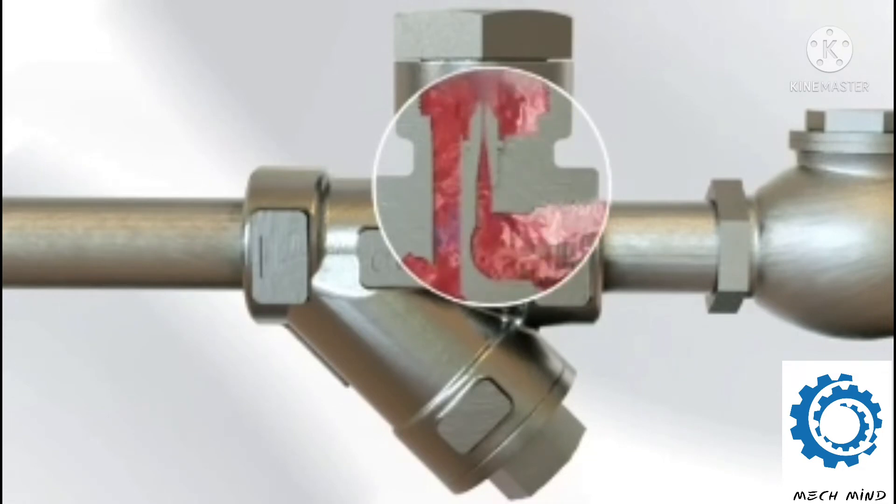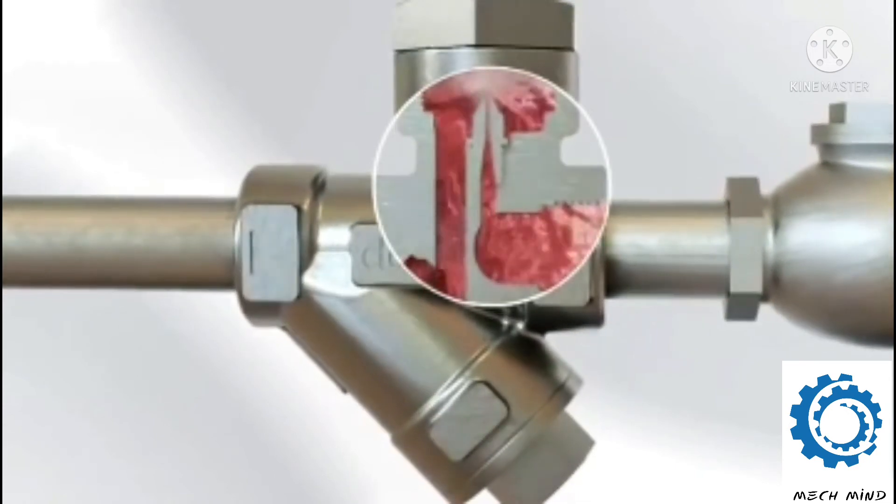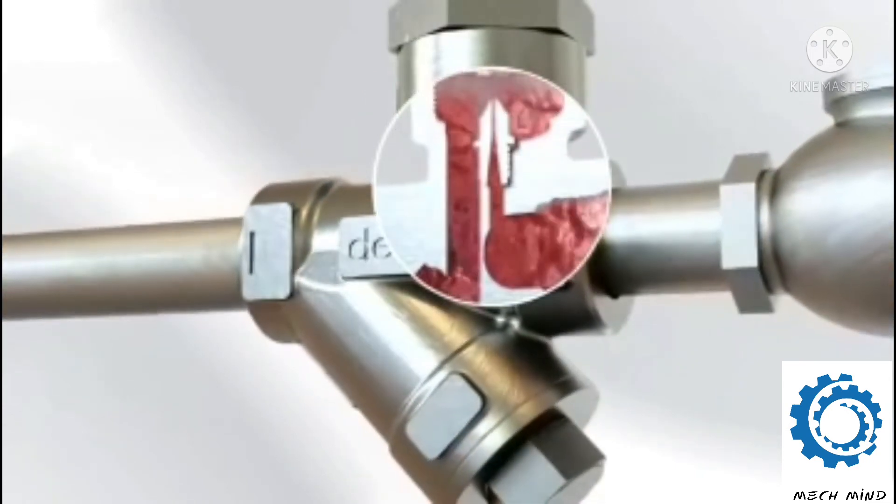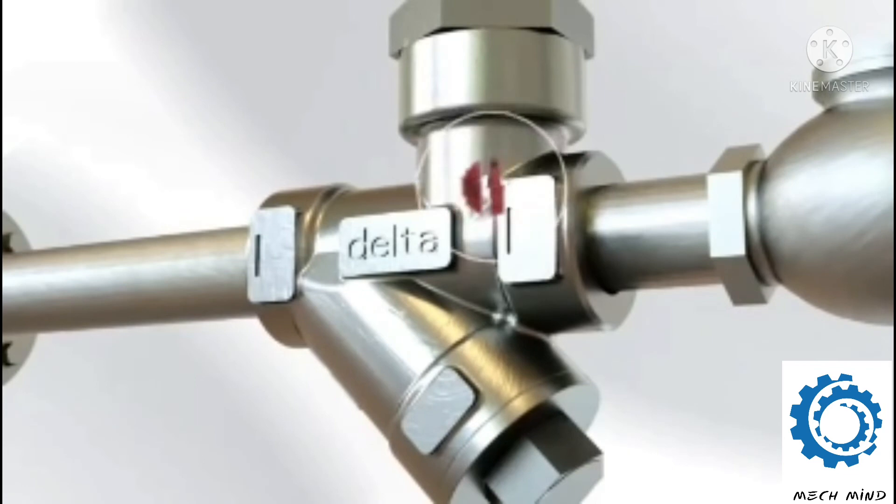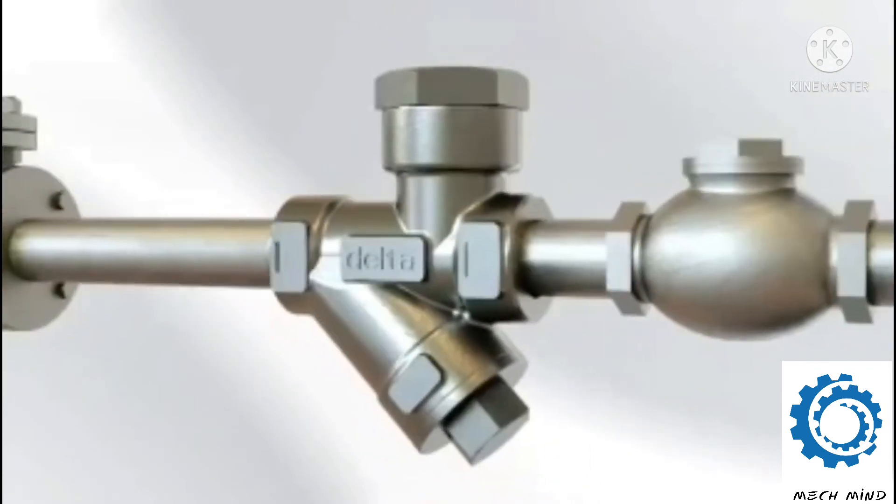This action gives the delta venturi orifice steam trap the ability to easily manage discharging varying condensate loads in a steam trap that has no moving parts, while still keeping the steam in the system.